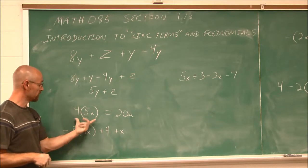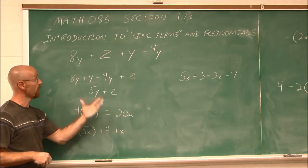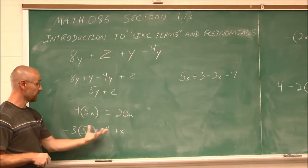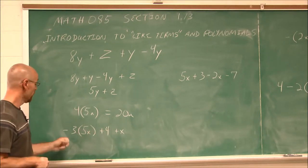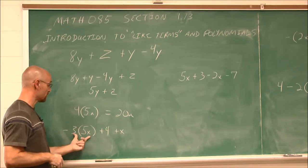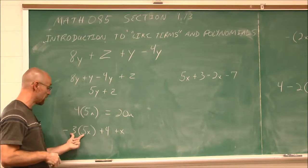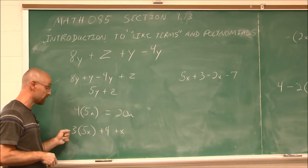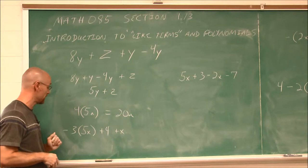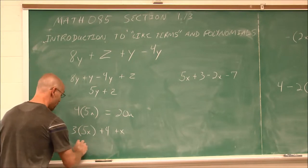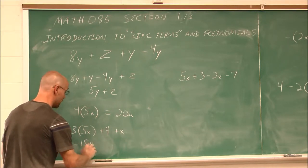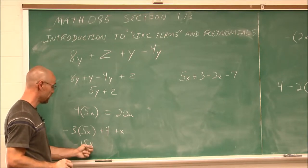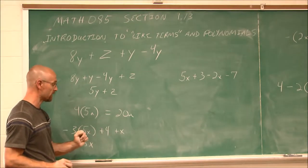Using both concepts — associative property and combining like terms — we can simplify negative 3 times 5x, plus 4, plus x. Negative 3 times 5: one negative gives a negative value. 3 times 5 is 15, so we get negative 15x plus 4 plus x.